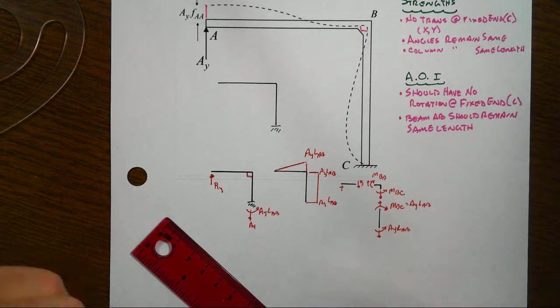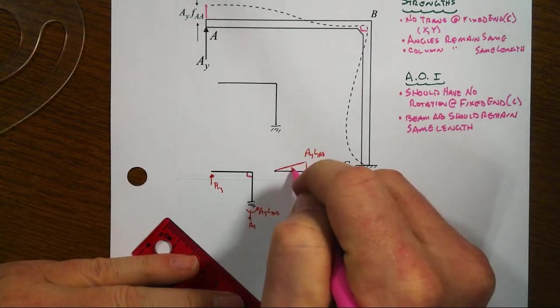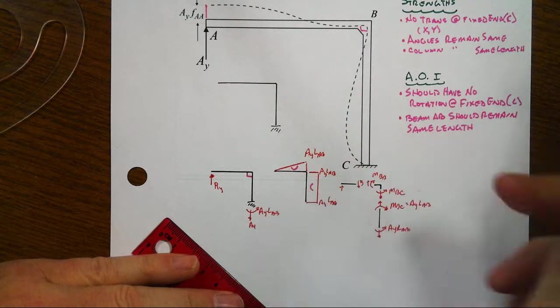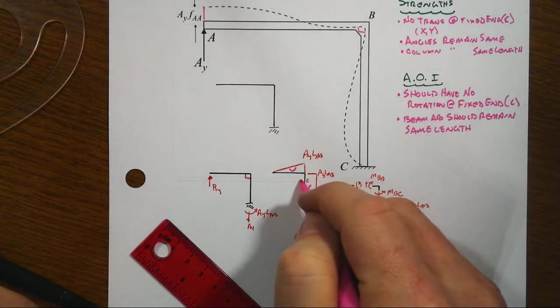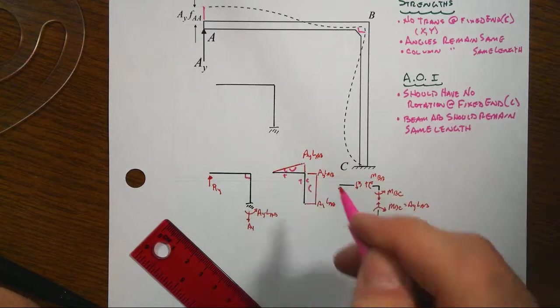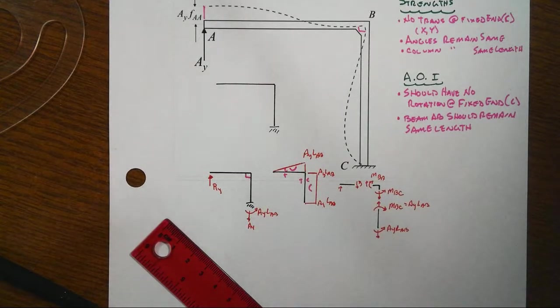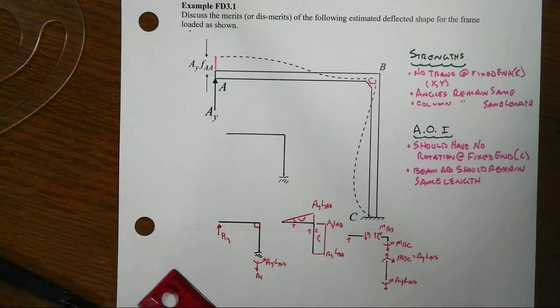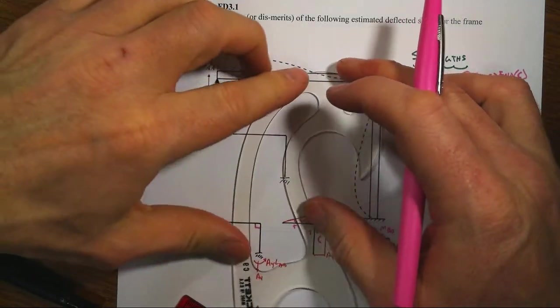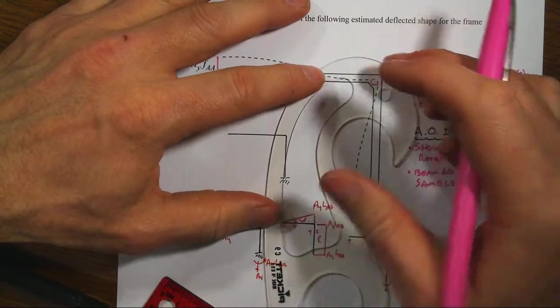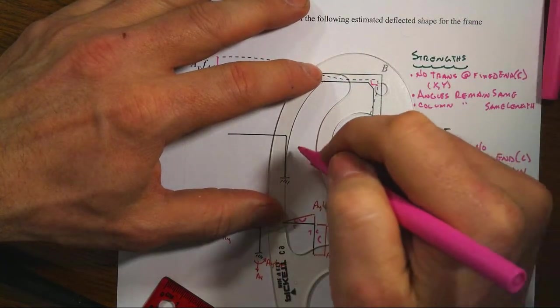Now that all tells us that we have curvatures that will look like this. Remember, we're drawing these on the compression side of the member. So compression there, tension there, compression there, tension there. And that means that the deflected shape should have curvature that looks more like so.